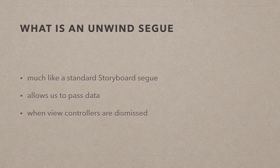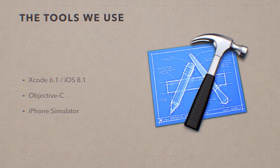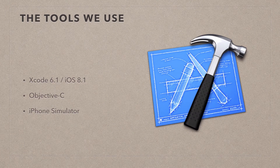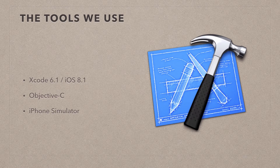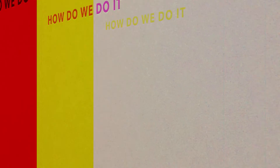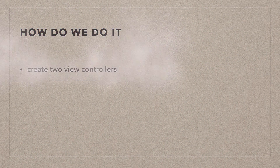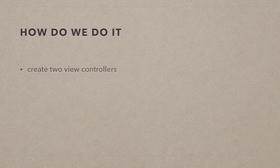I'm going to show you a little example app here, and we're going to utilize Xcode 6.1 and iOS 8.1. We're going to do this in Objective-C, and because we don't need a real device, we're just going to use the iPhone simulator. In principle, it's a very simple app — we're going to start with the single view application and we're going to have two view controllers: the first one that comes with the template, and a second one that we'll add ourselves.